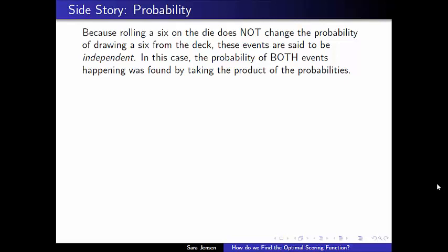Now, the reason that works is because these events are what are called independent events in probability. And in essence, what that means is that the two events don't have any influence on one another. The deck of cards doesn't know that I've rolled the die and rolling any particular value on the die doesn't change the probability of events that are happening when I draw the card from the deck. And it's only when events are independent in probability that we take those individual probabilities and multiply them together in order to get the combined probability of both things happening.